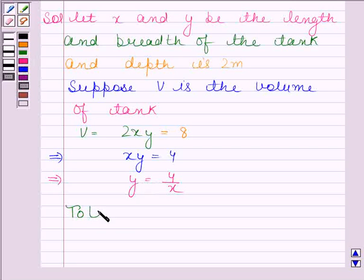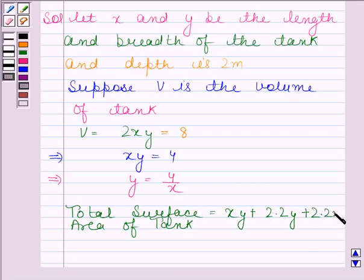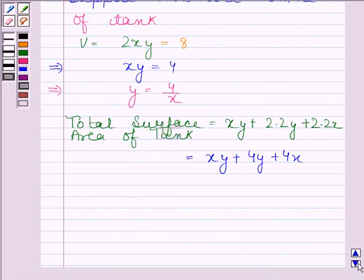Now total surface area of the tank is equal to xy plus 2 into 2y plus 2 into 2x. This is equal to xy plus 4y plus 4x. Now y is equal to 4 by x. So this is equal to x into 4 by x plus 4 into 4 by x plus 4x.